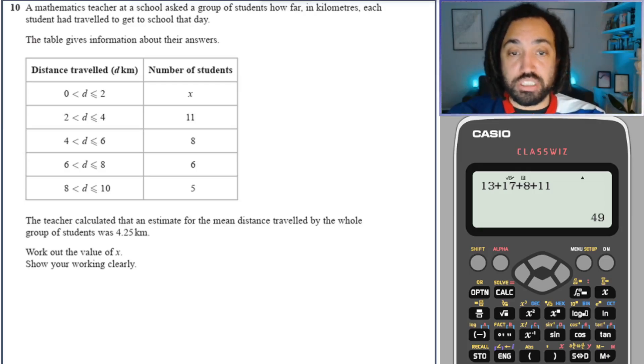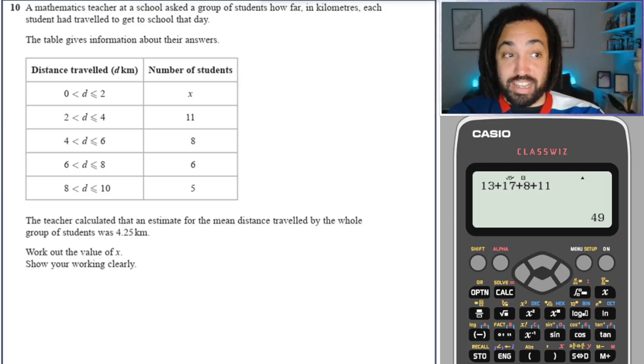Final question, and it's the trickiest of the lot. We have a maths teacher—hey, that's me—at a school who asked a group of students how far in kilometers each student traveled to school each day. They put them in categories, so we don't know the exact value of any of the students, but they're in categories. The teacher calculated the estimate for the mean total distance over the whole group of students was 4.25. Work out the value of x.